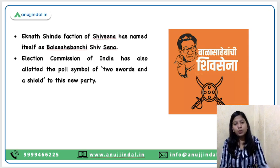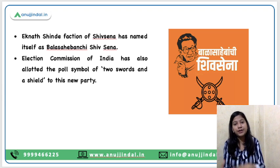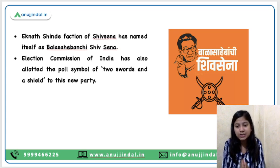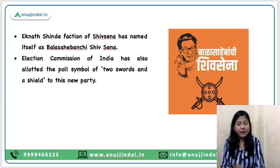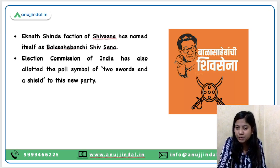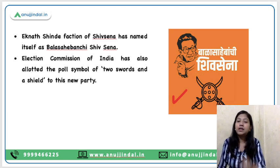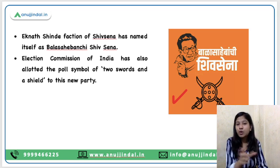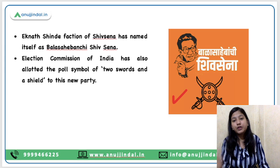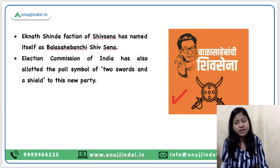We are talking about politics, so why not discuss the recent breakthrough that happened in Maharashtra in the political sphere? Eknath Shinde, who is the current Chief Minister of Maharashtra, has created his separate party out of Shiv Sena. That separate party is named Bala Saheb Banchi Shiv Sena. The new poll symbol allotted by the Election Commission to this party is two swords and a shield. A question can be framed: the two swords and a shield is the symbol of which political party in India? The answer is Bala Saheb Banchi Shiv Sena.